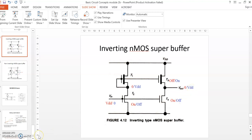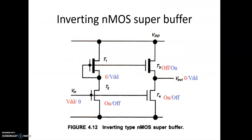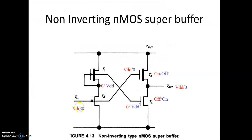Coming to the non-inverting type: when Vin is equal to VDD, transistors T2 and T3 are on. Because T2 is on, the voltage at this node will be 0. The same voltage at this node is fed to the gate of transistor T4. Since the node voltage is 0, the gate voltage fed to T4 is also 0, so T4 will be off.